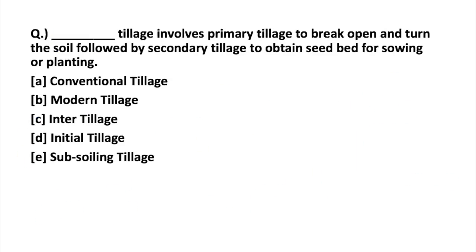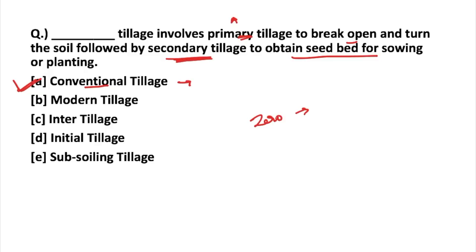The next question: dash tillage involves primary tillage to break open and turn the soil, followed by secondary tillage to obtain a seed bed for sowing or planting. Looking at the options, conventional tillage fits this definition — it involves primary tillage to prepare the ground for crops to grow, breaking open and turning the soil, followed by secondary tillage to obtain the seed bed. This is the method of conventional tillage. Today we are using modern tillage techniques rather than conventional tillage techniques.